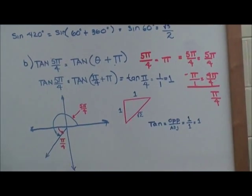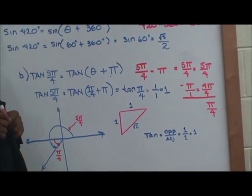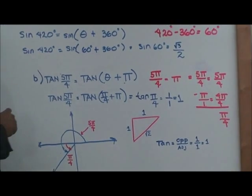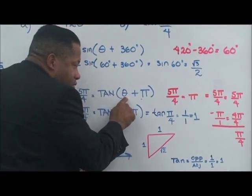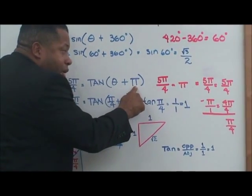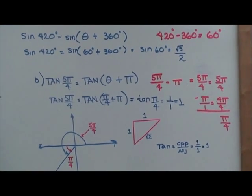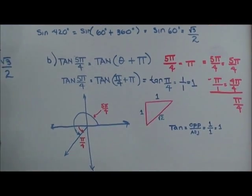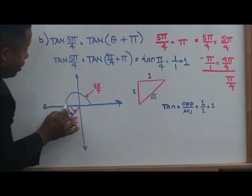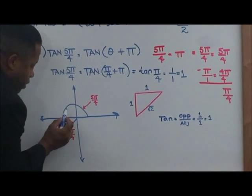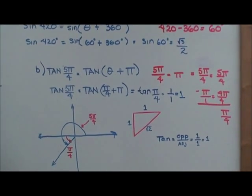Let's do another problem. Let's look at tangent 5π over 4. Tangent of 5π over 4 equals tangent of theta plus π. We also want to do a sketch of the graph. We start here and go 180 degrees, or π, and then keep going — that's going to be about 5π over 4.